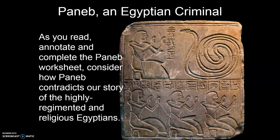Finally, read through the worksheet assigned today about Panab, who was an Egyptian criminal. As you annotate and complete the questions, think about how Panab contradicts our story. So far we've thought of the Egyptians as highly regimented, religious, devout people — you get a picture of really highly moral people when you think about the effort that went into creating the pyramids. Panab is going to throw a wrench into the works and shake up our idea of what the ancient Egyptians were like. Thank you very much and see you soon.